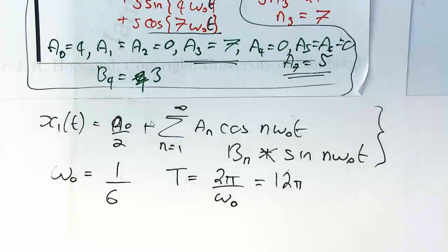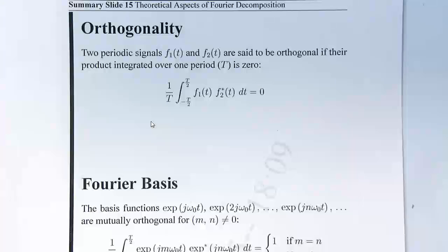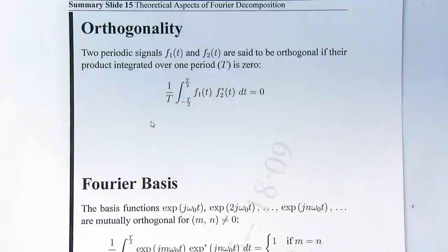Before we move on to Fourier transforms, there are a couple of things on the decomposition of periodic waveforms that I want to look at, because they will become important later on when we deal with the theory of Fourier transforms. So we're going to move on to summary slide number 15, and that's on orthogonality. You've actually done orthogonality in the maths course, so I'm not going to spend ages going over this, but I want to give a physical interpretation for what it means.